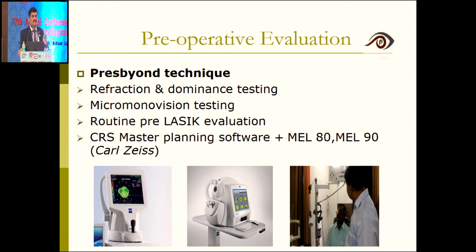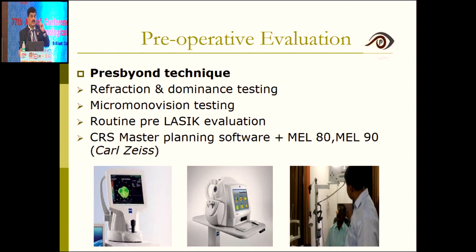Dominant eye testing is done by me personally because if you misidentify it, the treatment is messed up. Once you know the dominant eye — say the right eye — the left non-dominant eye undergoes micro-monovision testing by placing +1.5 D for near and asking the patient to read near and distance. If the patient can read 6/6 for distance and N5 for near with the non-dominant eye addition of 1.5 D, they will do very well. If the patient reports cross-blur even after 2–3 trials, they are not a candidate for this treatment.